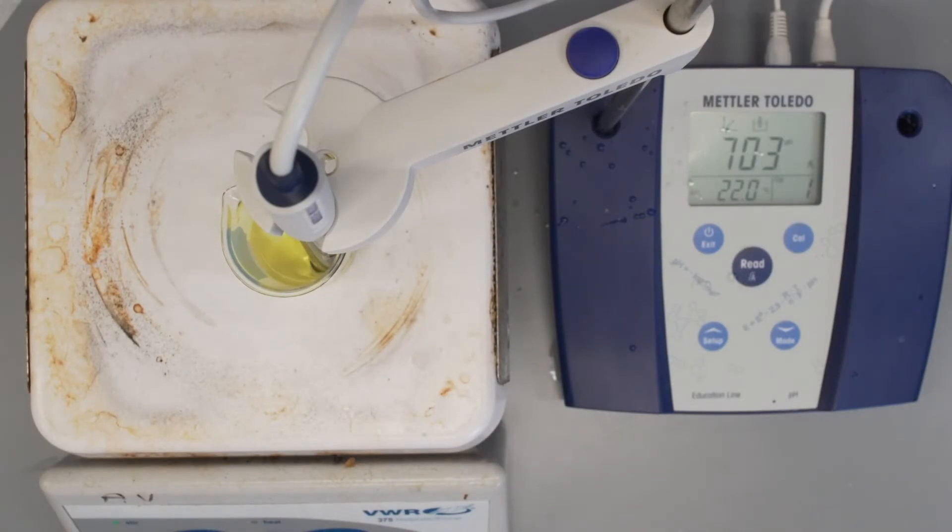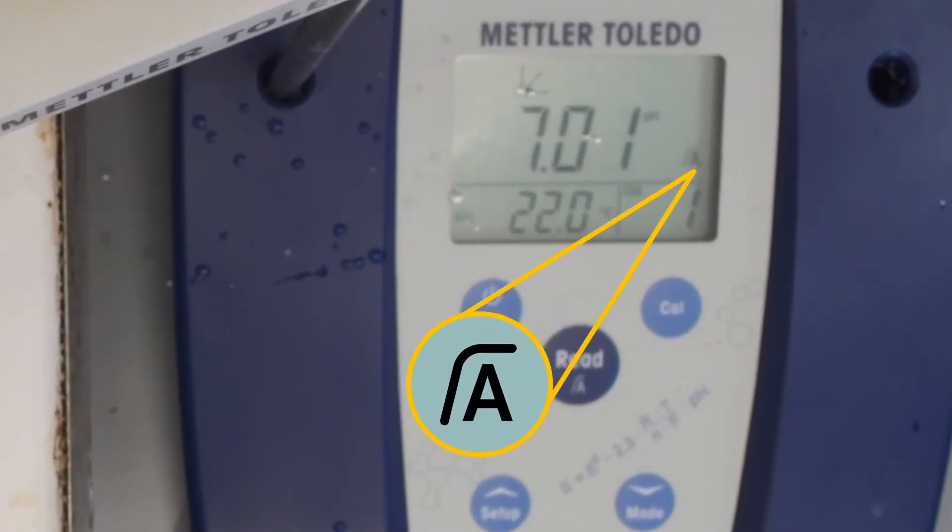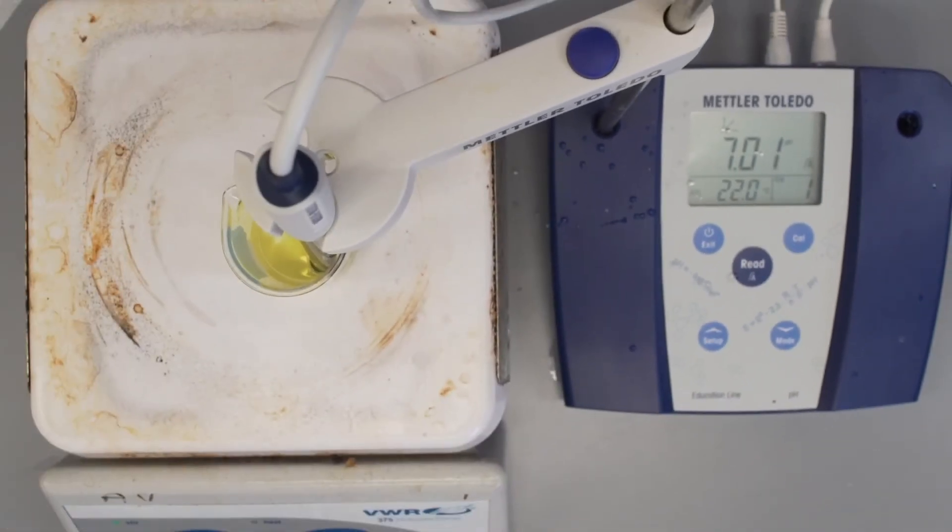Different pH meters will indicate this in different ways. In our case, a line will appear over the A at the bottom right-hand corner of the readout screen. The A just stands for automatic, which means that the meter stops readings automatically when it detects that the pH has stabilized.